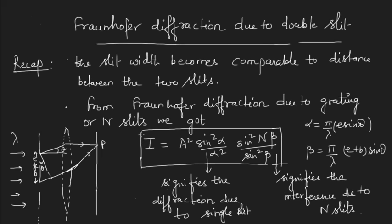The intensity formula is I = A₀² · (sin²α / α²) · (sin²(nβ) / sin²β), where the first term signifies diffraction due to single slit and the second term signifies interference due to n slits. Here α = (π/λ) · e·sinθ and β = (π/λ) · (e+b)·sinθ, where e is the slit width and b is the opaque space, so e+b acts as the grating element repeating n times.